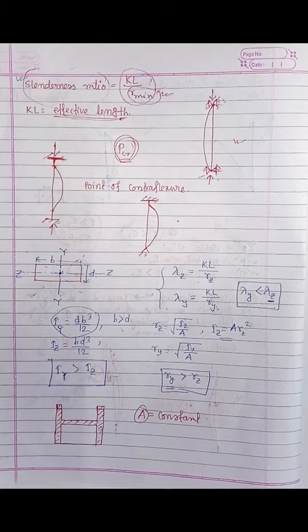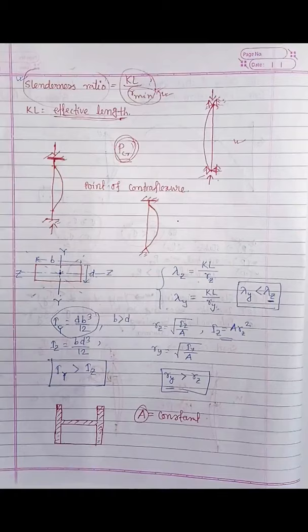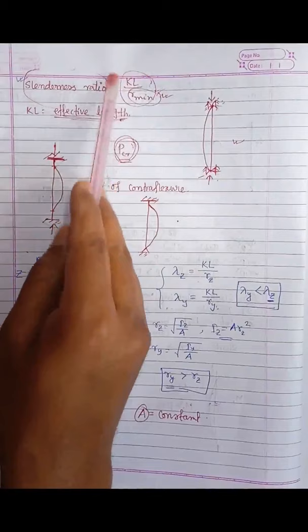In our last video lecture we completed some basic query part of compression members. In this session we will continue from that last video lecture where we learned about slenderness ratio and behavior in buckling. The buckling behavior is dependent on the slenderness ratio.